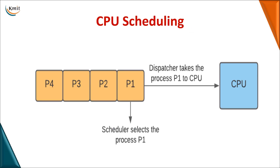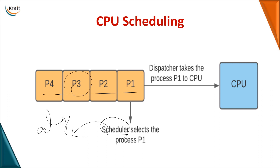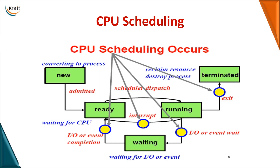When you have multiple processes present, there are two software modules involved: one is the scheduler and the other is the dispatcher. The scheduler takes the responsibility of selecting a particular process from the available processes — this selection is based on algorithms we'll be seeing. Once you decide that P1 needs to be given to the CPU, the dispatcher takes the responsibility of assigning that particular process to the CPU for execution.